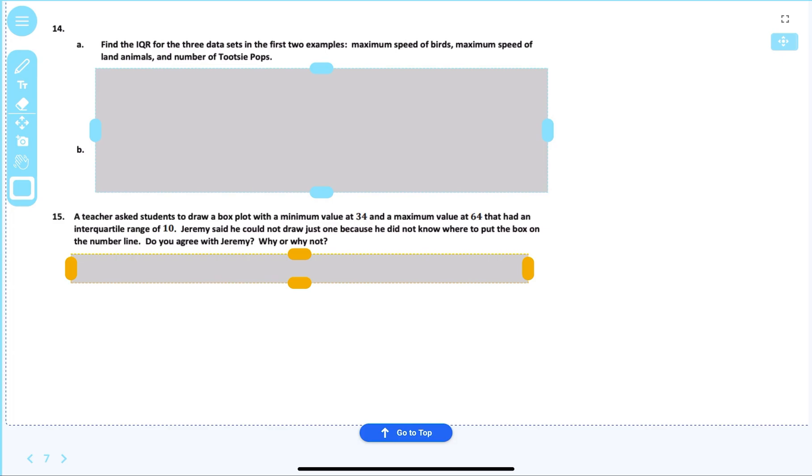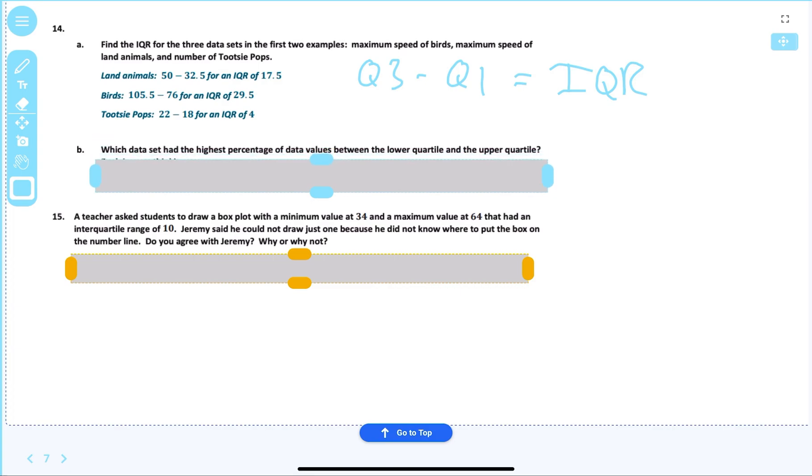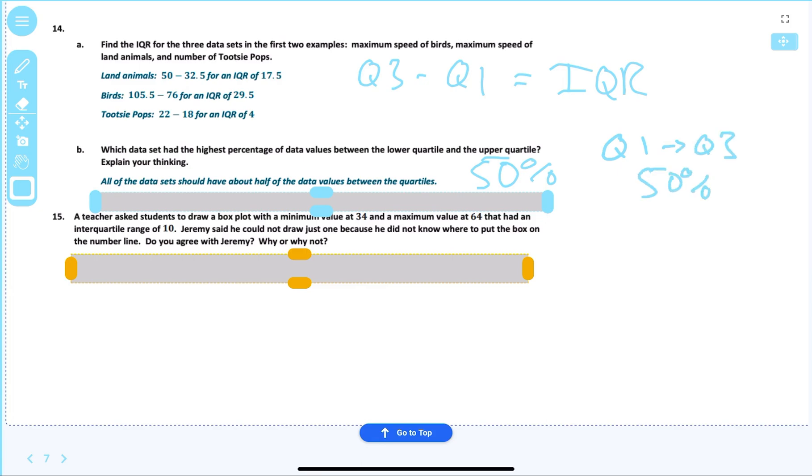Question 14 says, find the IQR of the three data points in the first two examples, maximum speed of birds and the Tootsie Pops. Hopefully you know to take the IQR, you take Q3 minus Q1, and you will get the IQR. So that's all you had to do there. And which data set had the highest percentage of data values between the lower quartile and the upper quartile? All the data sets should have about half or 50%. That's always the case. Should be. Q1 to Q3 should be 50%, should be every time.